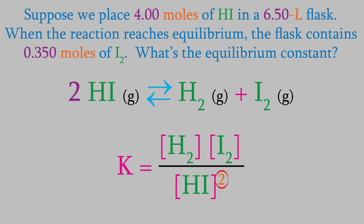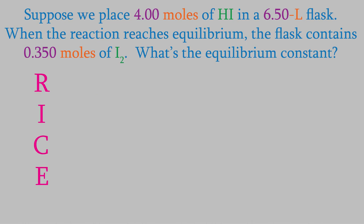So, to find K, we need the equilibrium concentrations, which we can get using a RICE table. We start by writing the balanced reaction in the top row. In the second row, we need the initial concentrations. There was no H2 or I2 in the flask at the beginning, so those two concentrations are 0.